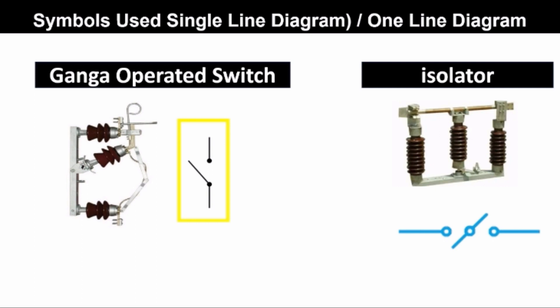This is an isolator and its symbol is like this. If the isolator has earth blade then the symbol becomes like this.